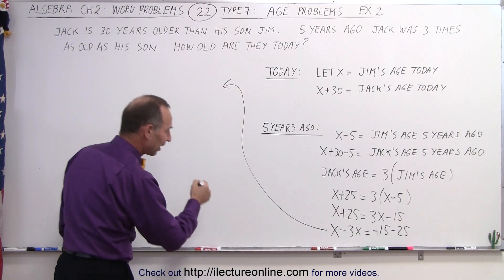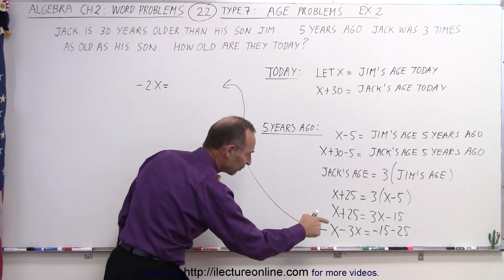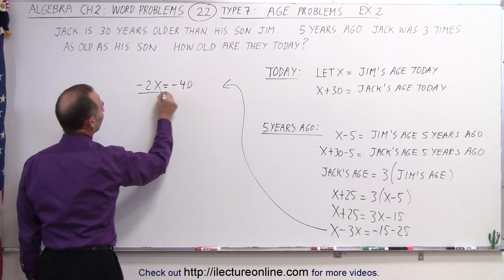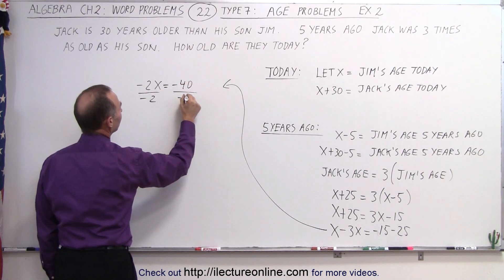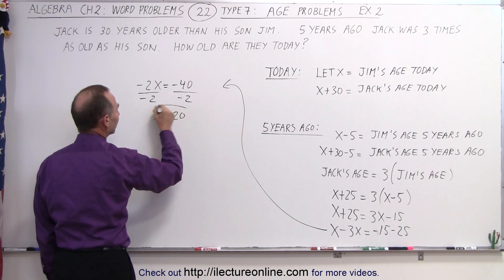Now on the left side we have x minus 3x which is minus 2x on the left side equals minus 15 minus 25. That's minus 40 on the right side. Now we divide both sides of the equation by the numerical coefficient from the x. So x becomes equal to a positive 20.